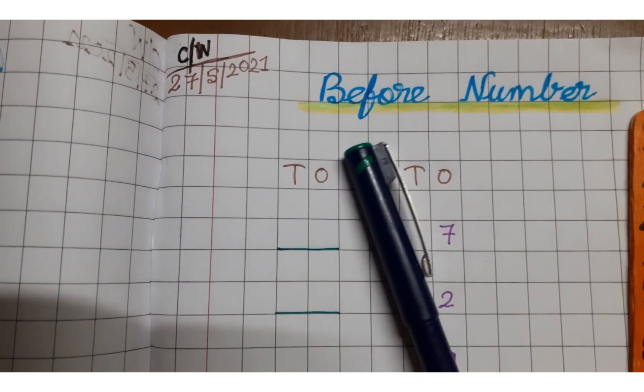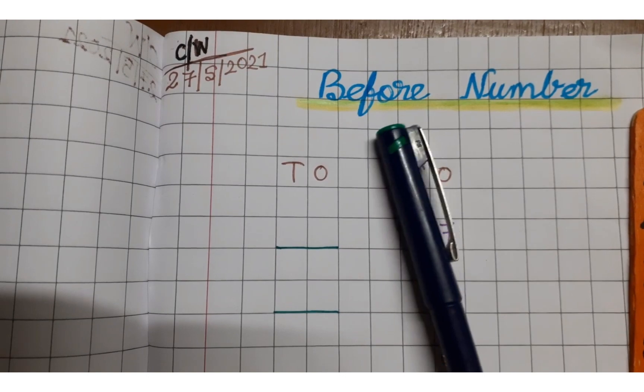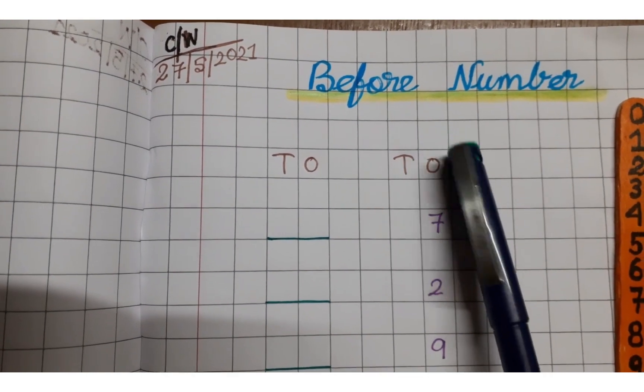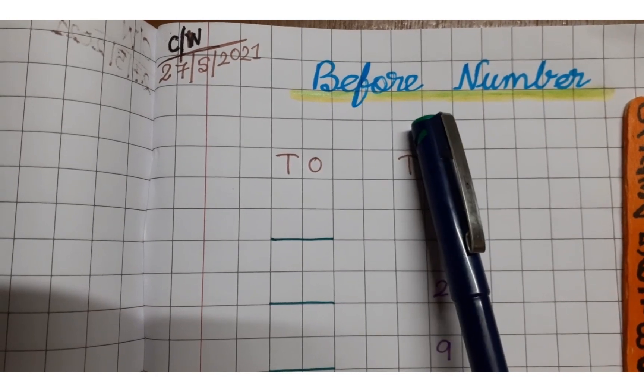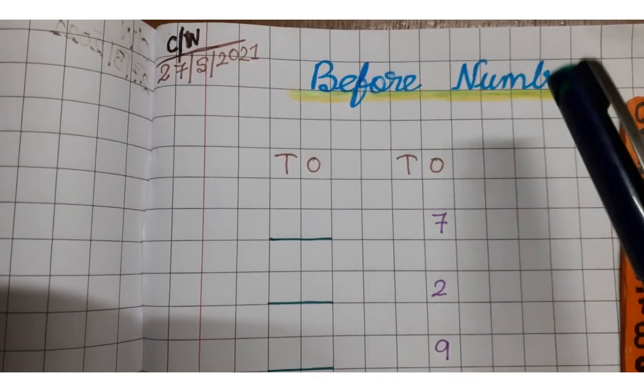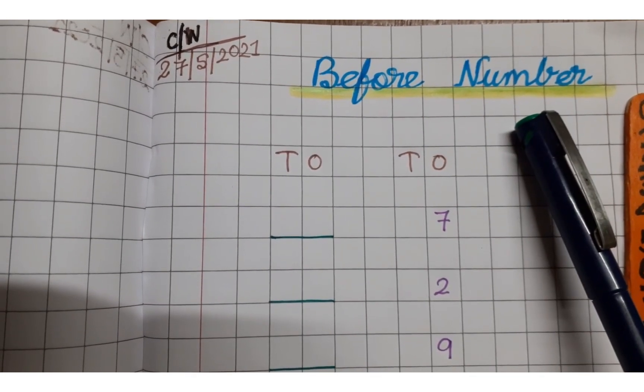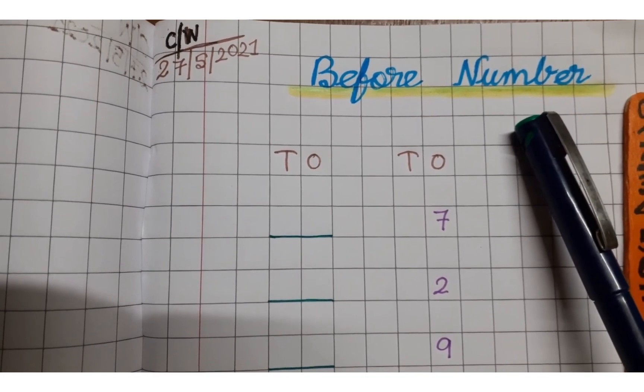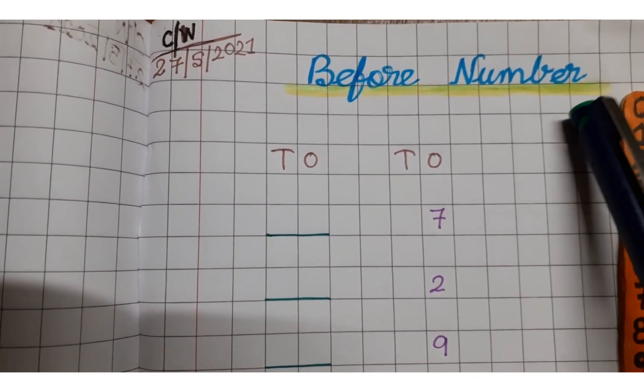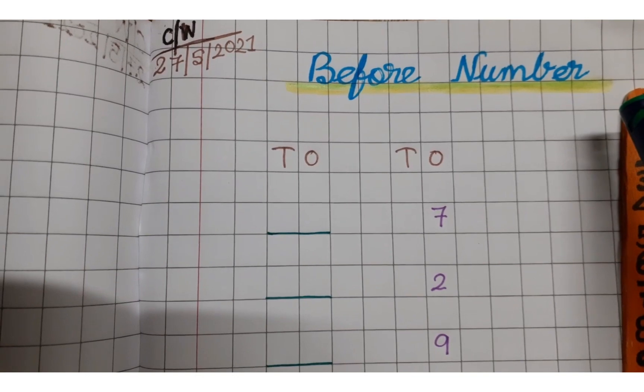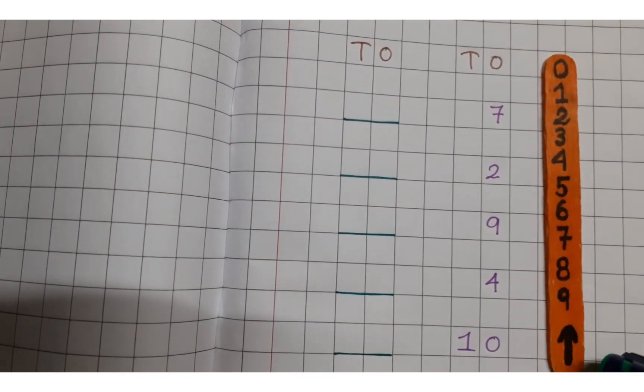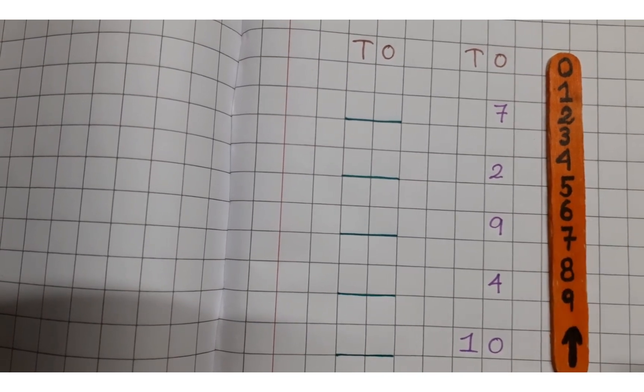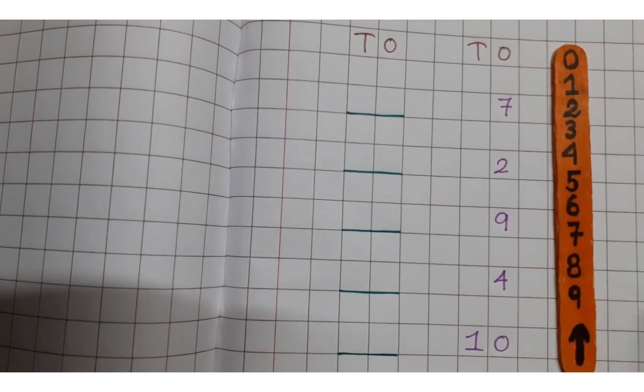B-e-f-o-r-e for, before, n-u-m num, b-e-r bar, number. Before number.